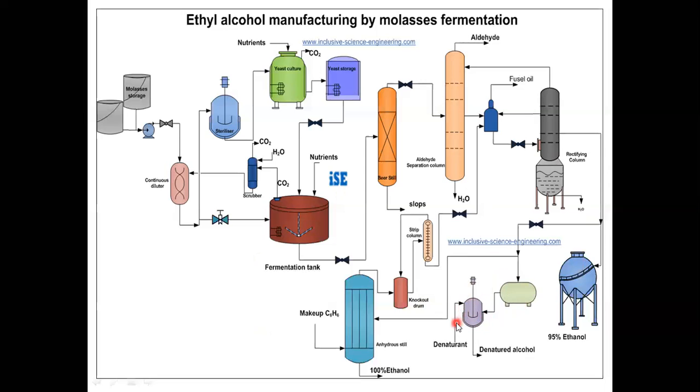In this mixed tank, denaturant is mixed with this 95% ethanol which is produced in this rectifying column to get the denatured alcohol. The denaturant is normally methanol is used, methanol having a 10% volume concentration.